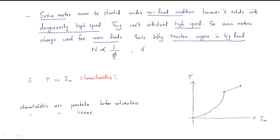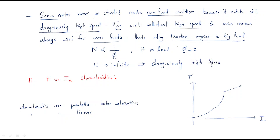If there is no load, the flux becomes zero. When flux becomes zero, speed has a chance of becoming infinite — that means dangerously high speed, and damage will occur. That is the very important reason why the DC series motor must always be started with a big load. Traction is the best example for this application.